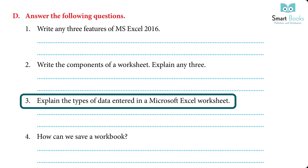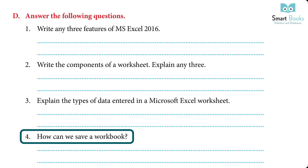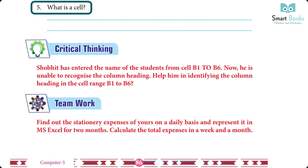3. Types of data entered in a Microsoft Excel worksheet: we can enter three types — numbers, text, and formula. 4. To save a workbook: click on the File tab and select Save or Save As. 5. What is a cell? A cell is an intersection of rows and columns; it is the smallest unit in a worksheet and both text and numbers can be written in it.